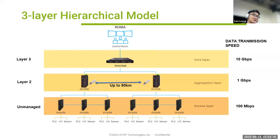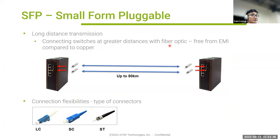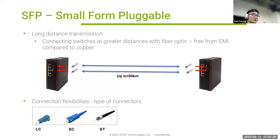The SFP port enables long-distance transmission using fiber optic cables. If two sites are very far from one another, you can use SFP for long-distance transmission — connecting switches anywhere from 550 meters up to 80 kilometers. Fiber optic is used because it is free from EMI compared to copper. If you have these requirements, you need a switch that comes with an SFP port.